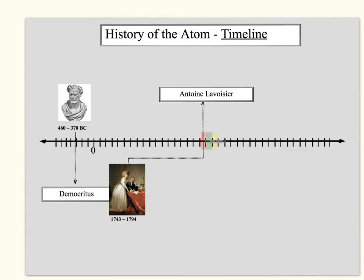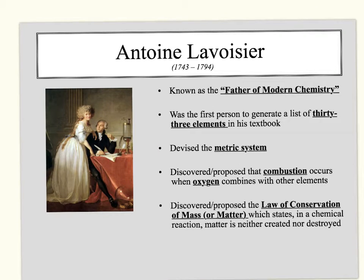Fast forwarding to the 1700s, we meet Antoine Lavoisier. He lived from 1743 to 1794, and he is known as the father of modern chemistry. He was the very first person to generate a list of elements — he had a textbook and wrote down all the elements he knew of, coming up with 33 of them. You can also thank Antoine Lavoisier for the metric system.